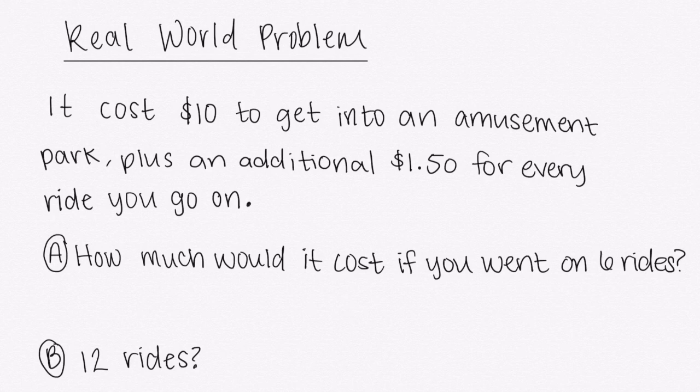All right, so we have our real world problem here, which tells us it costs $10 to get into an amusement park plus an additional $1.50 for every ride you go on. All right, so it's not just a straight up cost per ride. There's also that fee of getting in. We're going to use our evaluating expressions to come up with an expression and then evaluate for A, which is 6 rides and B, which is 12 rides. So first, let's take a look at this problem and think of an expression we could come up with. All right, so first of all, we know it costs $10. So $10 is going to be the first part of my expression.